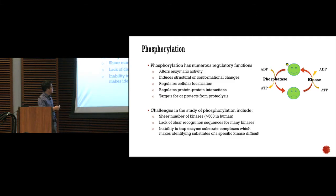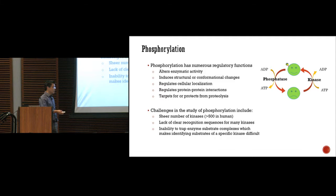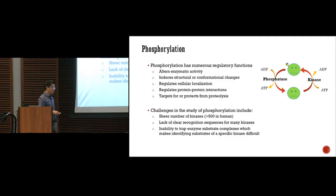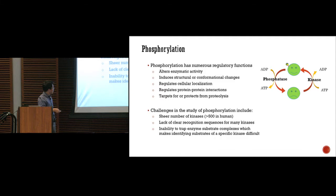Phosphorylation also relates to protein-protein interactions. Adding a phosphate group can directly impact the interaction site or change the conformation of the protein, leading to overall changes in protein-protein interactions. We don't exactly know why phosphorylation — rather than methylation or others — was chosen for particular cell signaling, but it is certainly one of the most important PTMs.